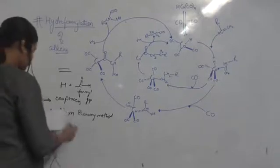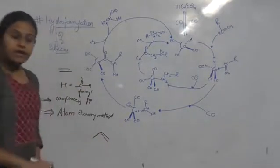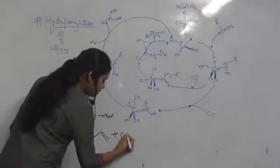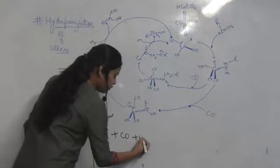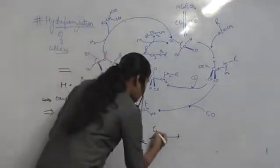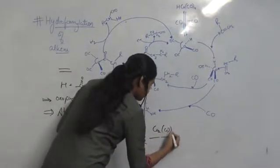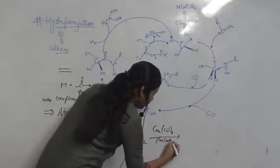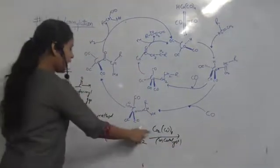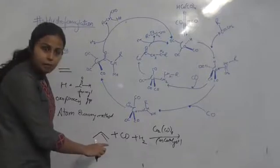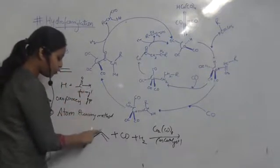Now, how does the reaction work? Suppose we are having an alkene and we are going to do the hydroformylation of this alkene. The alkene is given CO (carbon monoxide) plus H2. The catalyst used in hydroformylation is the cobalt catalyst Co2(CO)8. What we get after adding the catalyst and these two compounds to the alkene: formylation of the alkene takes place. The double bond is removed and there is addition of the formyl group C=O and a hydrogen group.